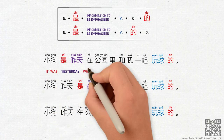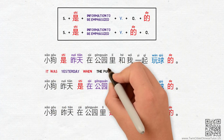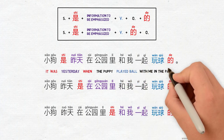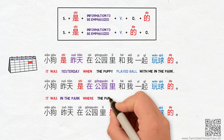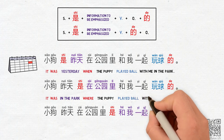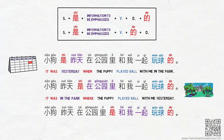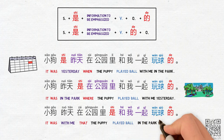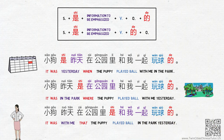The meanings are: 'It was yesterday when the puppy played ball with me in the park.' 'It was in the park where the puppy played ball with me yesterday.' 'It was with me that the puppy played ball in the park yesterday.' Interesting, huh?